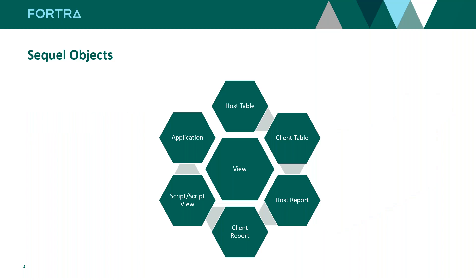Getting started, we've got all these objects, and the View is the central piece because the View is what extracts the data from your files. Without the View, you can't really do anything else. From the View you have all of these other options. With tables we have a host version and a client version. The same with reports. With scripts we have two types: the script and the script view. And then we have something called applications. We're going to piece together this puzzle so you're familiar with what is in your toolbox.